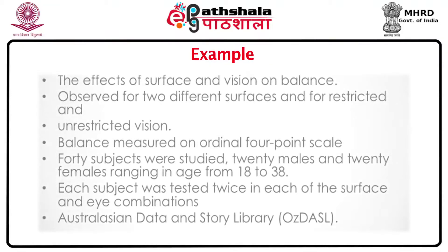Let us now look at a concrete example. The outcome is balance for a number of subjects, measured on an ordinal 4-point scale. For each subject it has been observed for two different surfaces and for restricted and unrestricted vision. 40 subjects were studied: 20 male, 20 female, with ages ranging from 18 to 38. Each subject was tested twice in each of the surface and eye combinations. For more on this dataset you can refer to the Australasian data and story library.